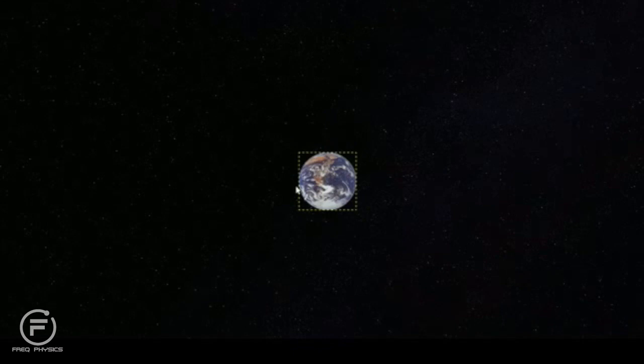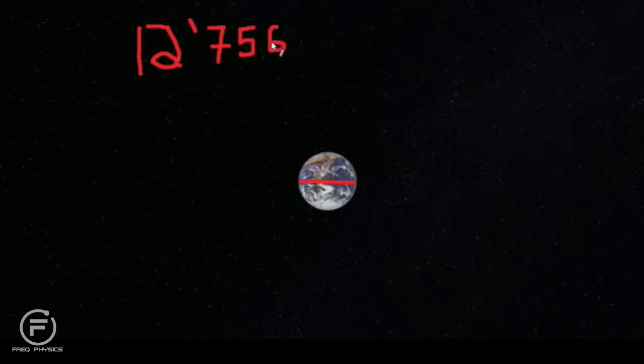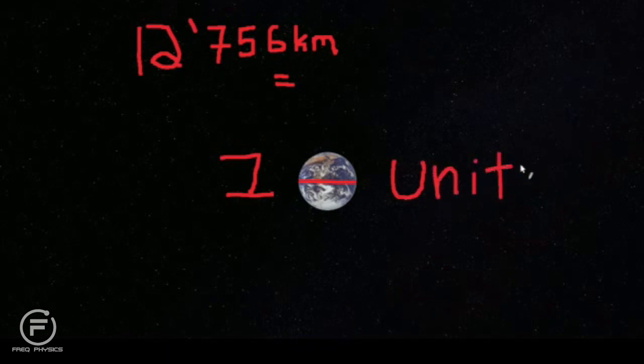But let's make this simple. We're going to use one unit that we understand a little better, and that's Earth. Now, Earth is huge. It itself has a diameter of 12,756 kilometers, or 7,926 miles. But it's probably easier to imagine one Earth unit. That is, 12,756 kilometers equals one Earth unit.